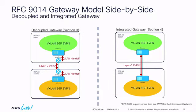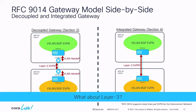RFC 9014 defines two different modes of building these interconnections. One is the traditional mode called the decoupled gateway — section three in that RFC — which basically puts VLANs between the gateway and the DC edge. If you want something more fancy, there's the integrated gateway mode with ingress tunnel splitting and an egress tunnel. Both are defined without the layer 3 aspect.